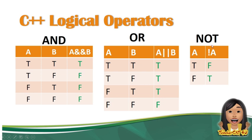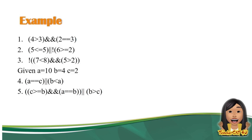Next is the Logical NOT operator. For example, you have expression A, and you apply NOT to expression A. If the given expression is true, it becomes false. If the given expression is false, it becomes true. Now let's try solving some expressions and identify their truth values.